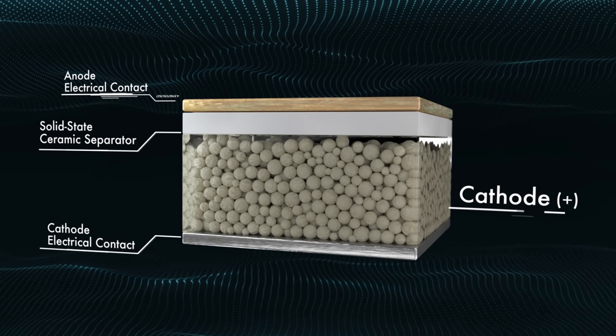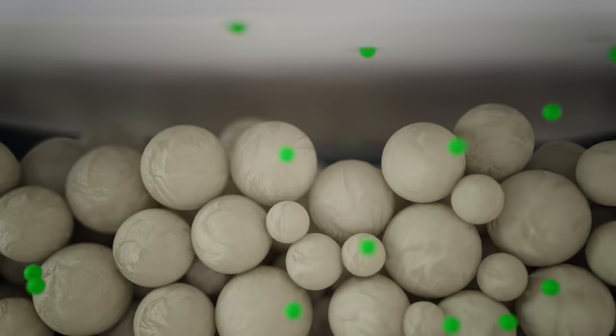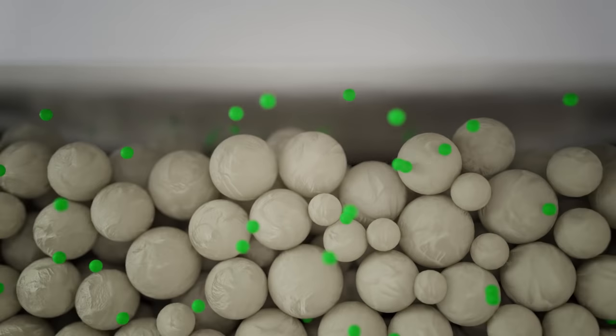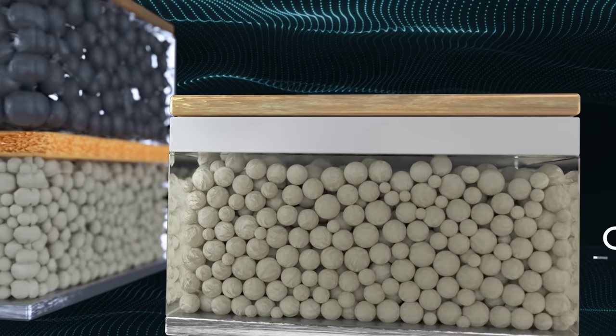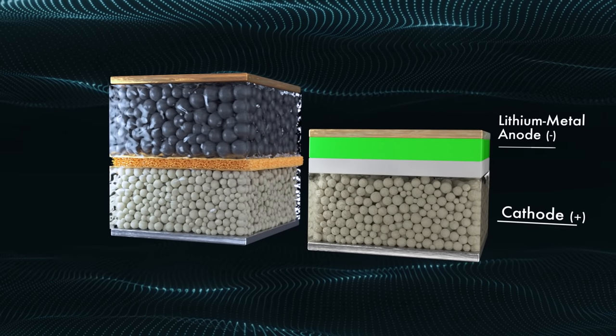As the battery charges, the lithium leaves the cathode, traveling through the atomic lattice of the non-porous solid-state ceramic separator. Once the lithium is through the separator, it deposits between the separator and the electrical contact, forming an anode of pure metallic lithium.